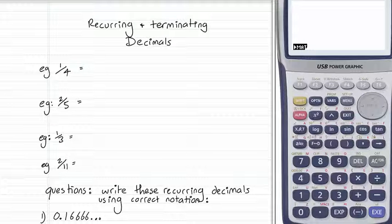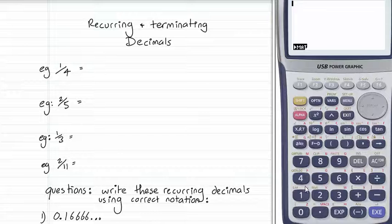Recurring and terminating decimals. We know how to convert a fraction to a decimal. We do the top divided by the bottom, numerator divided by denominator.